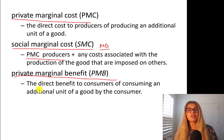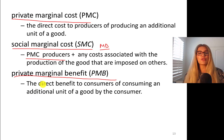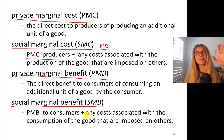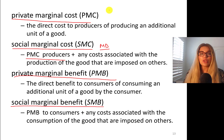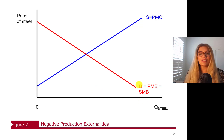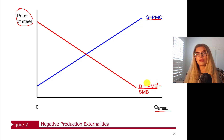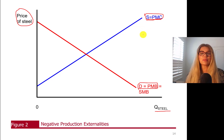Private marginal benefit is the direct benefit to consumers of consuming an additional unit of good. Social marginal benefit is private marginal benefit plus any costs associated with the consumption of goods that are imposed on others. I highly recommend you write these down. As you can see on the supply and demand curve — quantity of steel on the x-axis, price of steel on the y-axis — supply will always equal private marginal cost, and demand will always equal private marginal benefit.